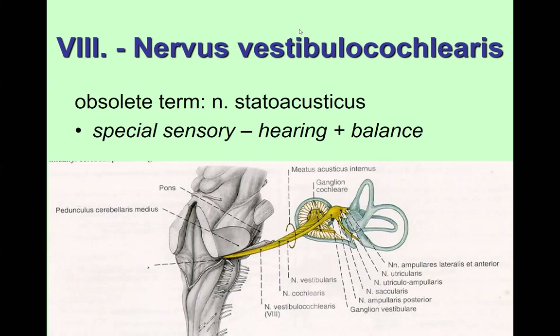The vestibulocochlear nerve leaves together with the facial nerve at the pontocerebellar angle. The most common tumor of peripheral nerves can appear here — it's called the neurinoma of the acoustic nerve, or vestibulocochlear nerve neurinoma. Symptoms can be either dysfunction of the vestibulocochlear nerve or compression of the facial nerve causing peripheral facial palsy, due to the close relationship of both nerves.